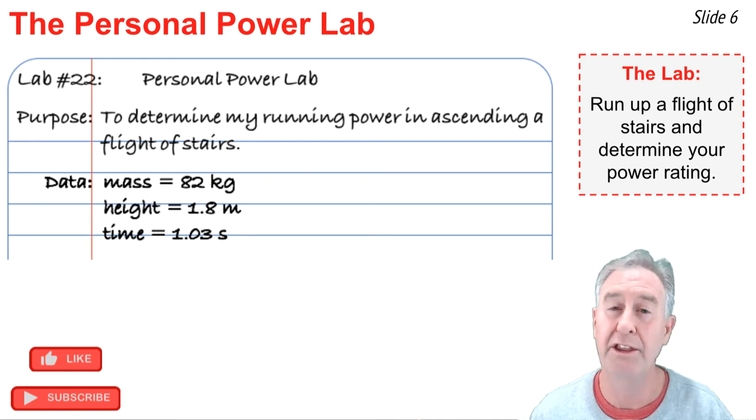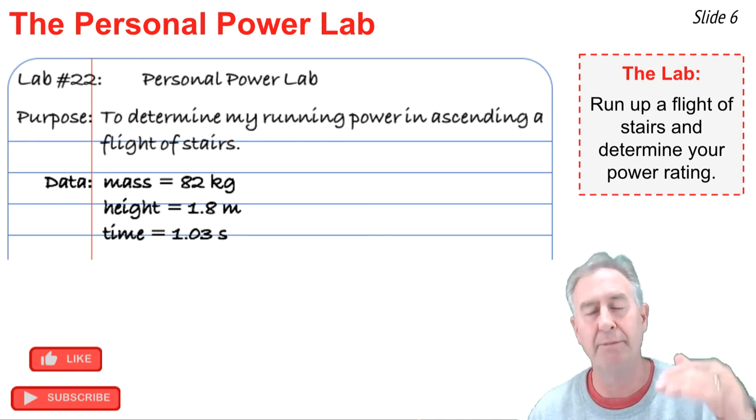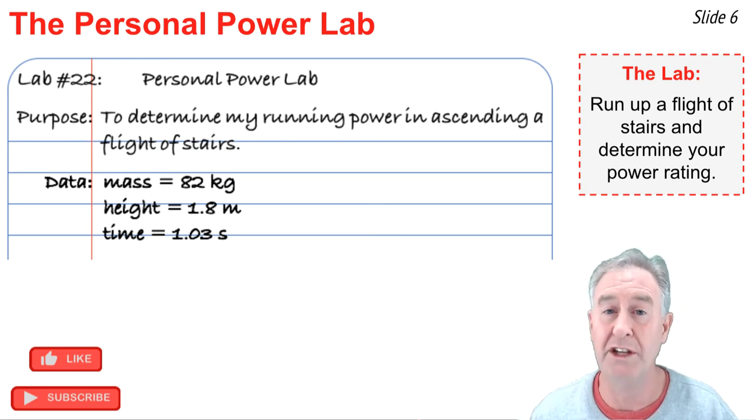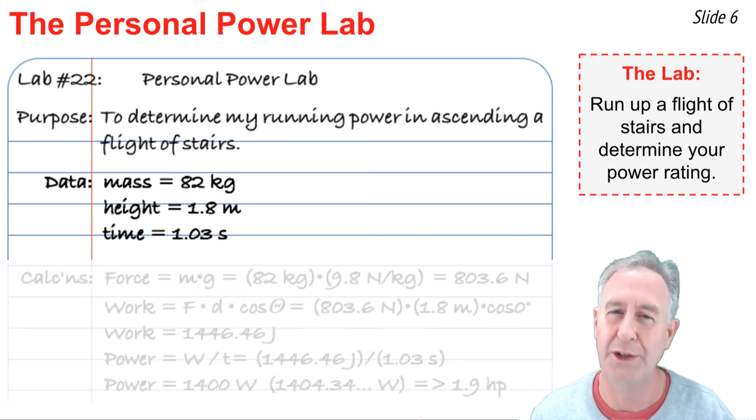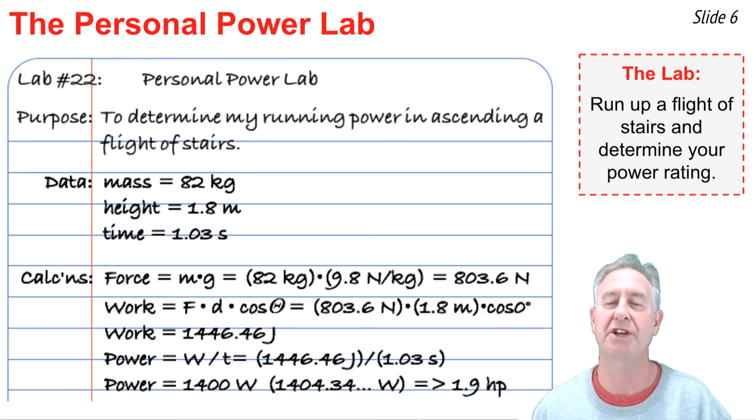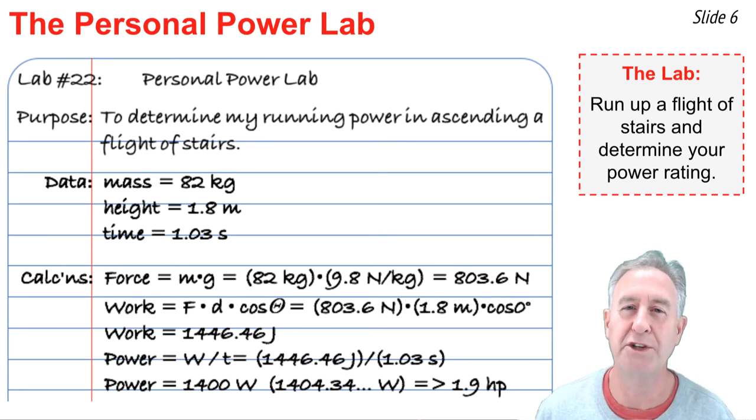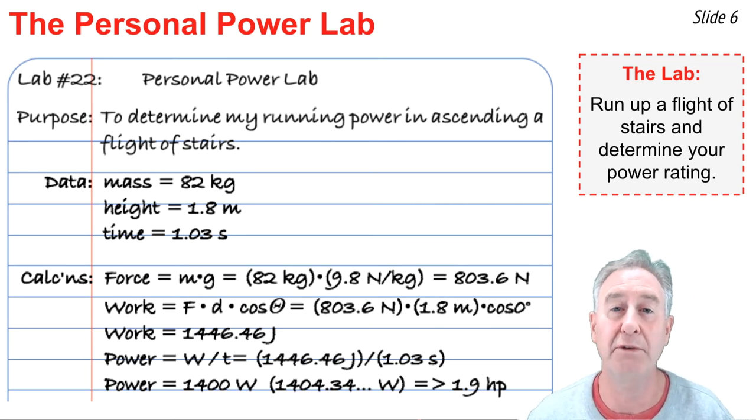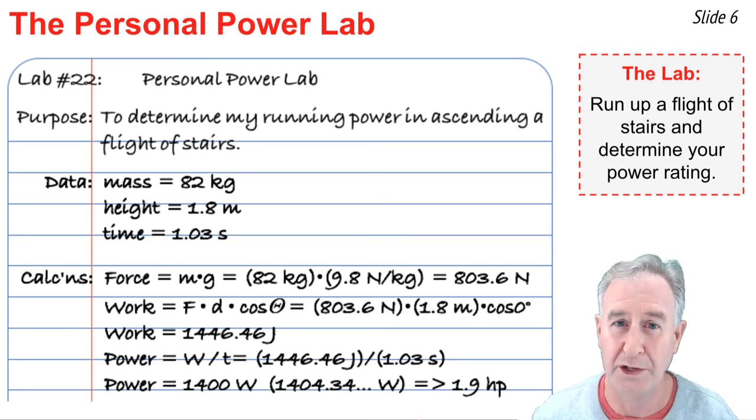To determine the power, we need to first determine the force that the person applies to lift themself up. We'll assume at a constant speed. And, then we need to use force and displacement in order to determine the work. And finally, the work with the time in order to determine the power. The calculations go like this. For the force, we'll say the upward force is equivalent to the force of gravity, which is m times g. 82 kilograms times 9.8 newtons per kilogram, which gives us a value of 803.6 newtons for the force.